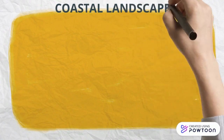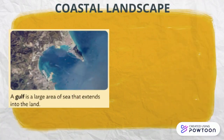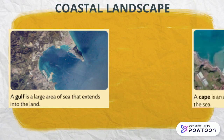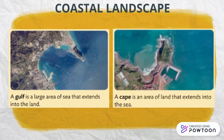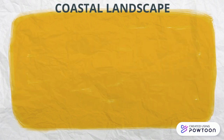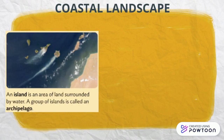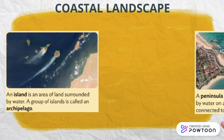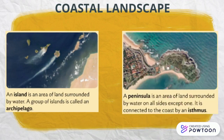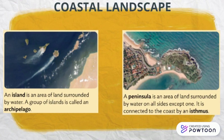Features in a coastal landscape: a gulf is a large area of sea that extends into the land. The cape is the opposite — it is an area of land that extends into the sea. An island is an area of land surrounded by water, and a group of islands is called an archipelago. A peninsula is an area of land surrounded by water on all sides except one, and it is connected to the coast by an isthmus.